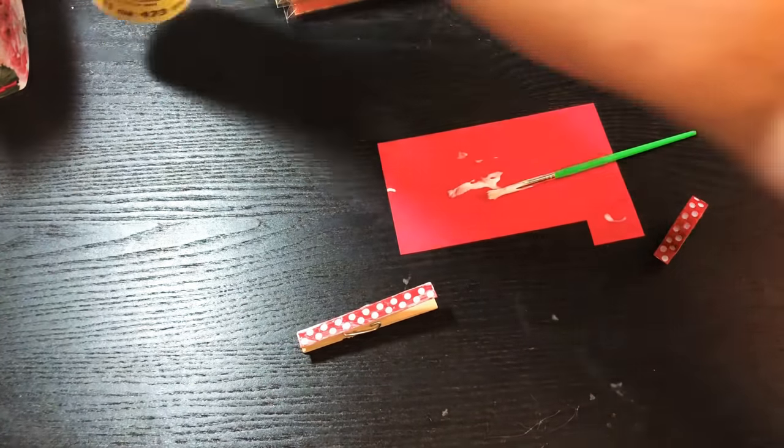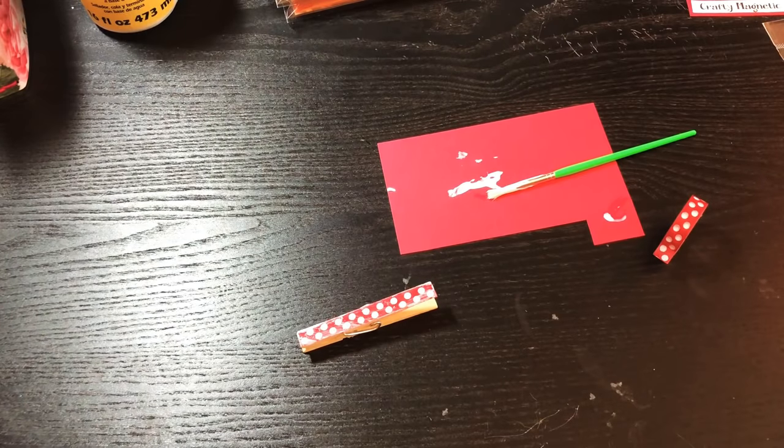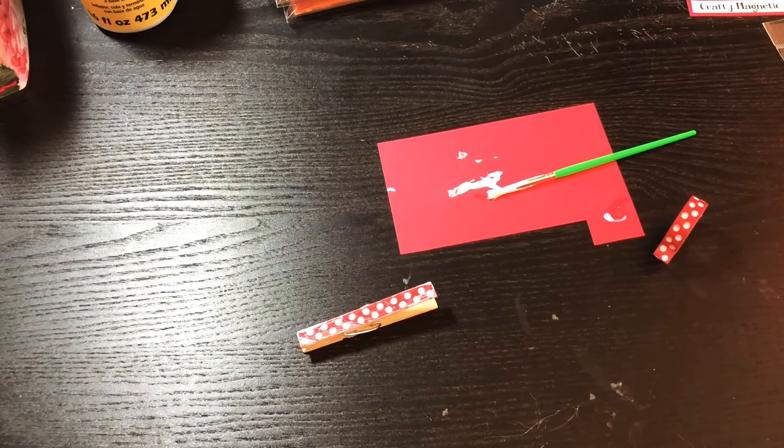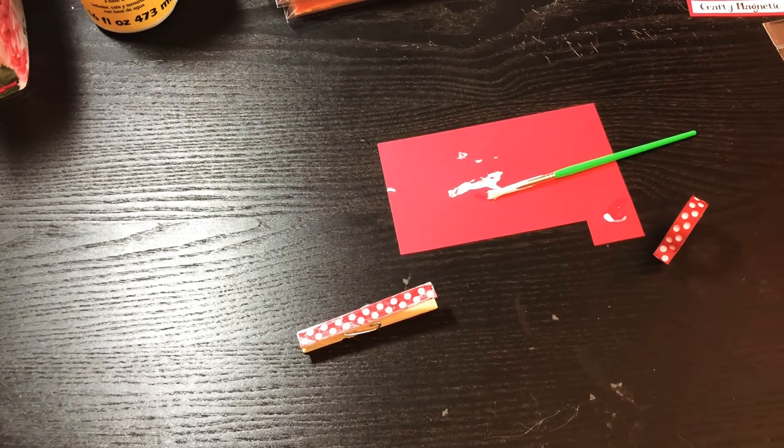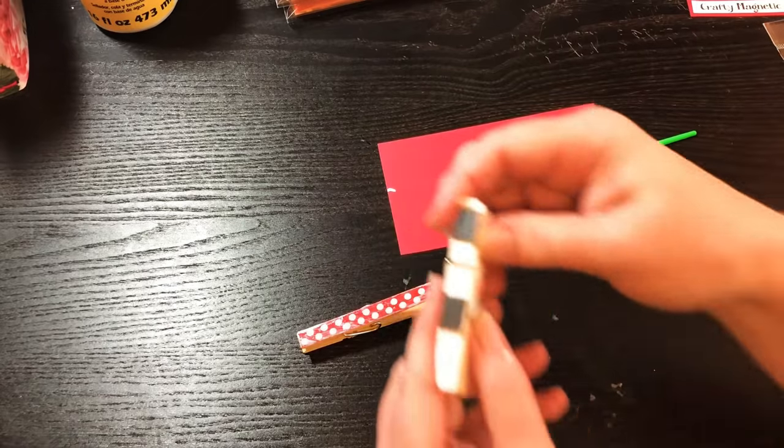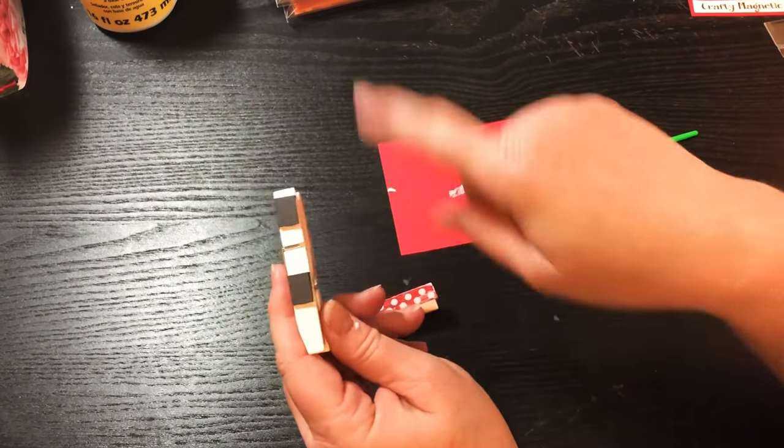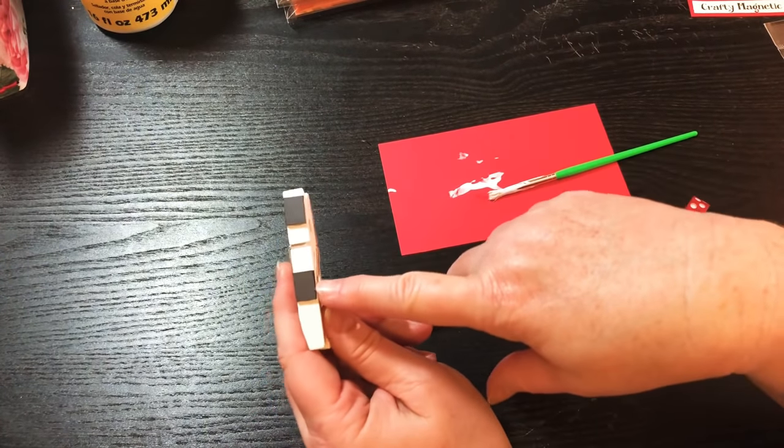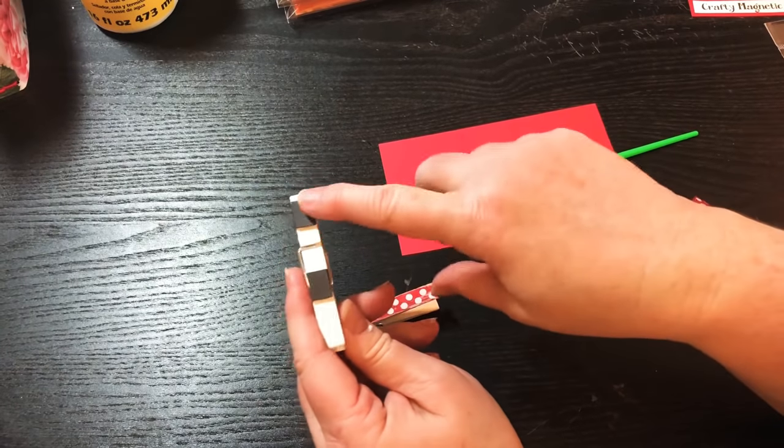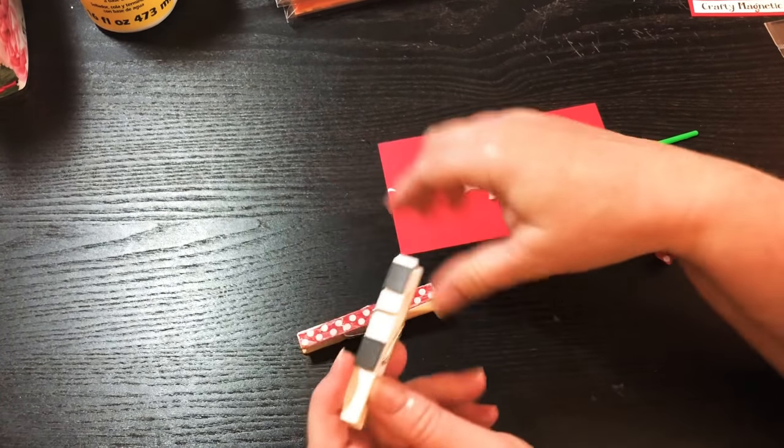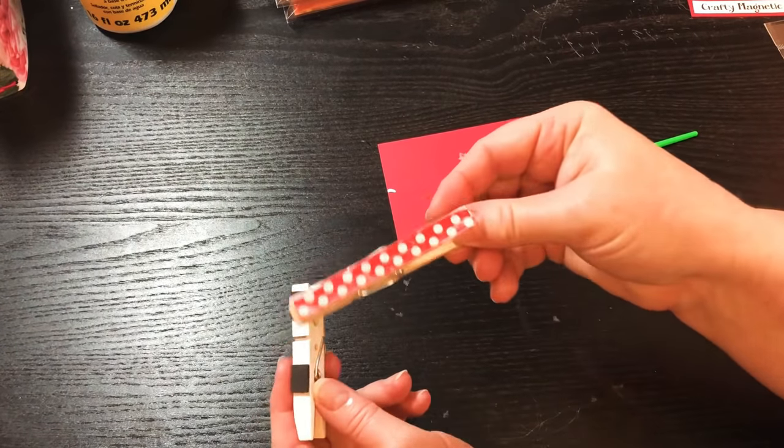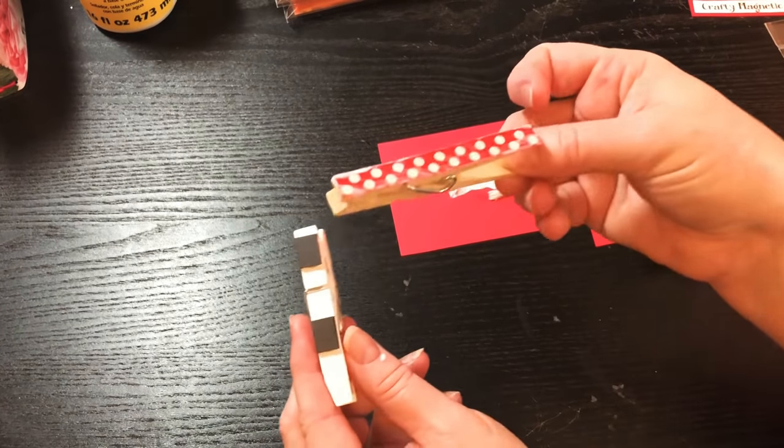And what I did as far as the magnets for the back, once it dried, let me see if I can find some. I don't have any more, but let me just show you the back of these. I bought a roll of magnet and it comes like in a roll. You buy it in the craft section and I just cut little pieces. And I used the E6000 glue and I glued it on the back.